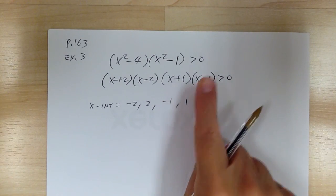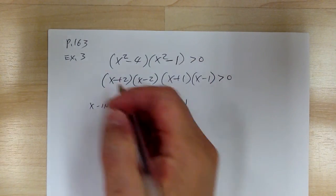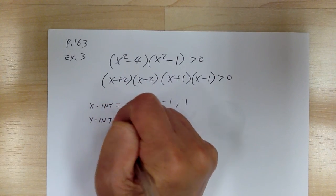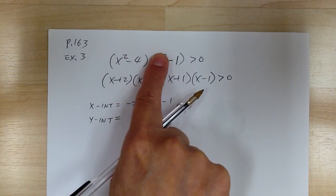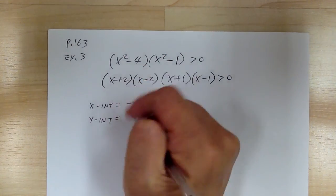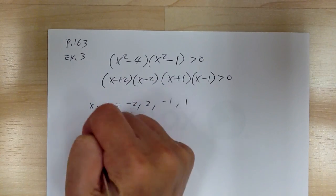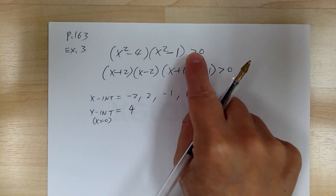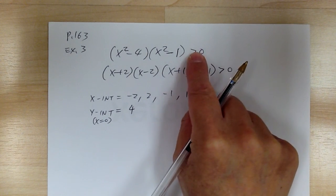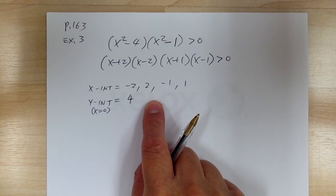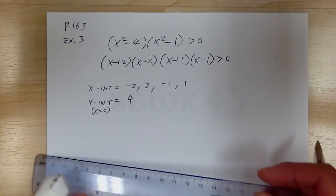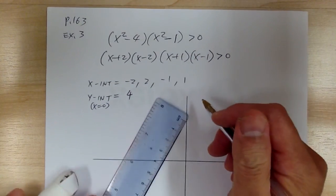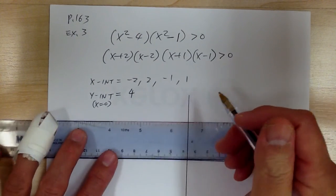When finding the intercepts, don't worry about the inequality — just treat it as an equation. The y-intercept when x = 0: the x² terms drop out leaving -4 times -1, which gives positive 4. These are your critical points. Go ahead and sketch the graph first without worrying about the inequality yet.